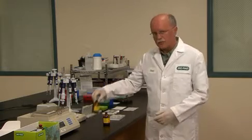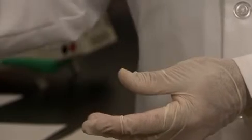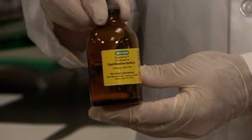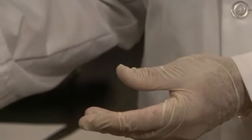The steps following rehydration and focusing of the IPG strip are equilibration of the IPG strip in preparation for the second dimension gel. The equilibration process is a two-step procedure. Equilibration buffer number one contains DTT for reduction of proteins. Equilibration buffer number two contains iodoacetamide for alkylation of proteins. Each solution contains SDS for denaturation of proteins to ensure optimal performance in the second dimension.